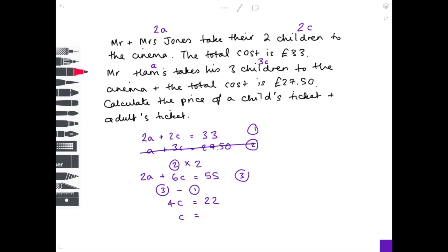How do we solve for C? Well, we divide both sides by 4 to get a value which is 5.5. Now we're substituting in C into any of the equations. So I'm going to take the first equation. So 2A plus 2C, so that's 2 lots of 5.5 equals 33.